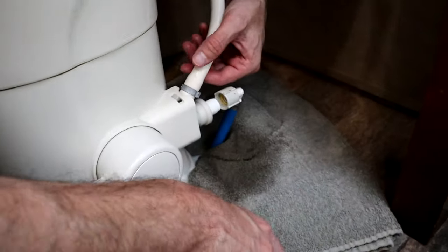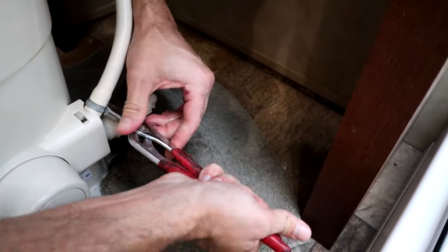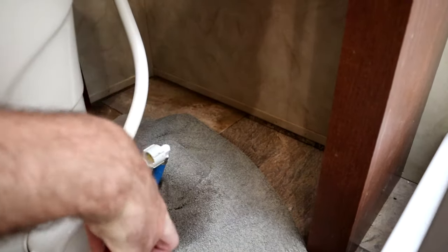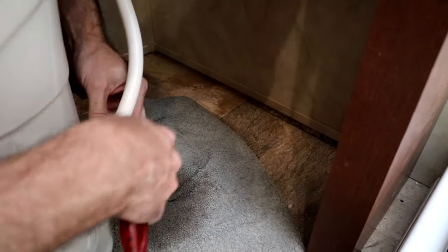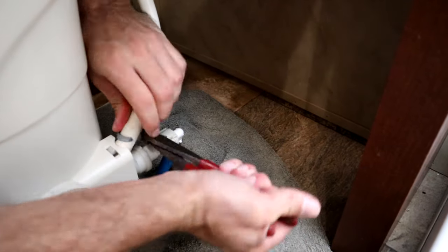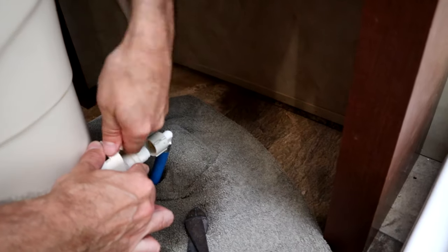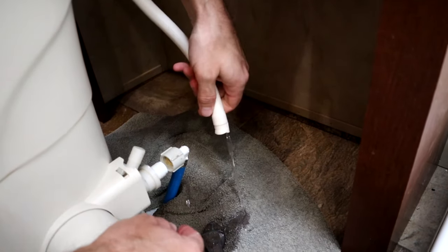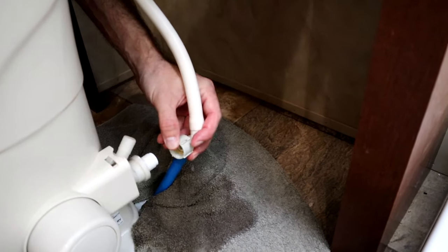So next step is going to be, you can cut it off or break it off. Either way, it's got to come off. Alright, I'm going to try to cut it off with some diagonal cutters. There we go. This is why the towel is a good idea. Okay, so your water lines are free.